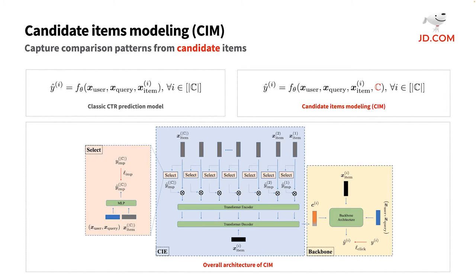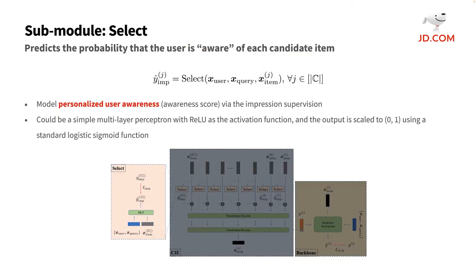CRM consists of three components: the SELECT submodule, the CIE module, and the backbone module. SELECT is a submodule used to select the items from the candidate set that the user could probably be aware of, and to introduce the inductive bias for the CIE module that these items play a more important role while modeling the implicit context contained in the candidate items.